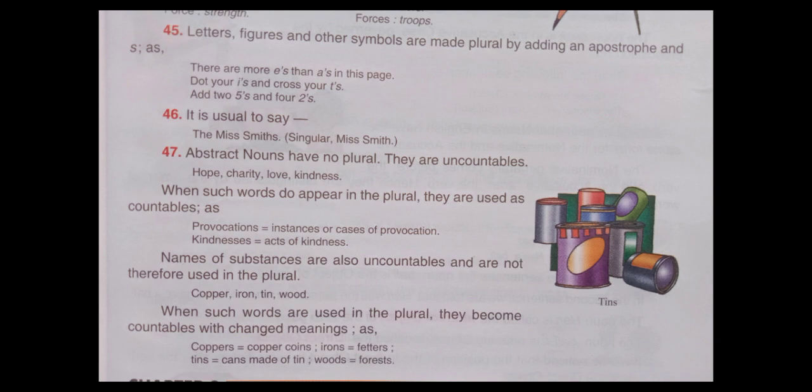Some nouns have no plural. They are uncountable: hope, charity, love, kindness. When such words do appear in the plural, they are used as countables, as: provocations means instances or cases of provocation; kindnesses means gifts of kindness. Names of materials are also uncountable and are not therefore used in the plural: copper, iron, tin, wood. When such words are used in the plural, they become countable with changed meanings, as: coppers means copper coins; irons means fetters; tins means cans made of tin; woods means forest.